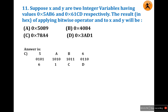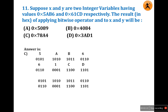Next we convert 61CD into binary. In hexadecimal, each digit uses four binary bits. D equals 1101, C equals 1100, 1 equals 0001, 6 equals 0110. Now we perform the AND operation on both numbers.